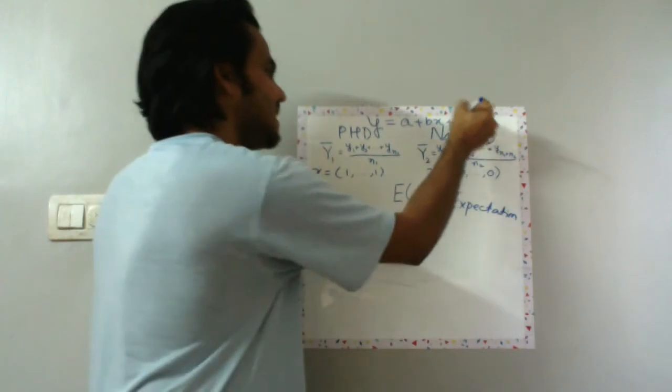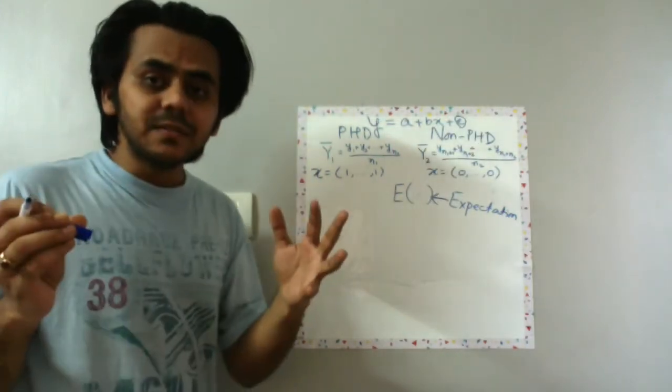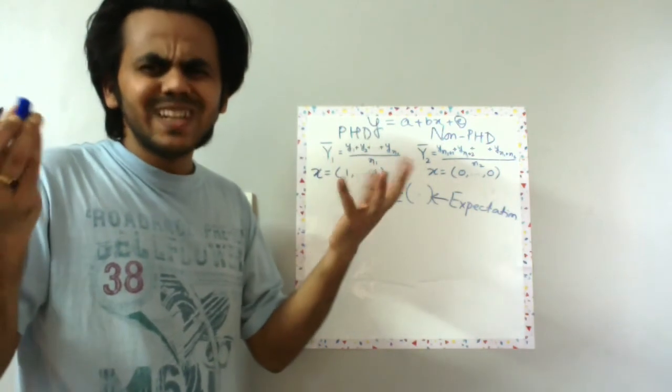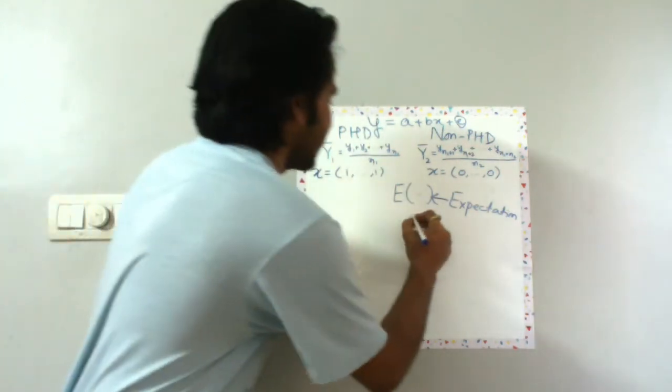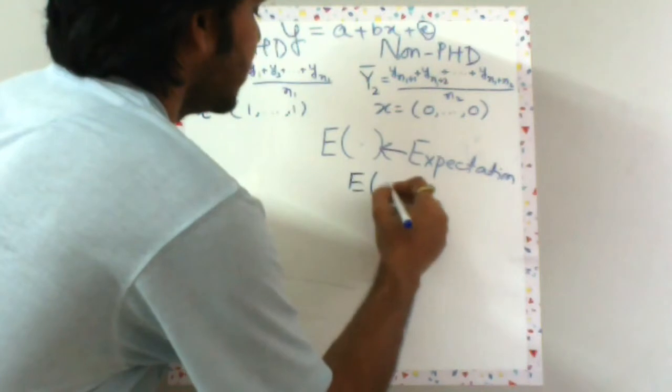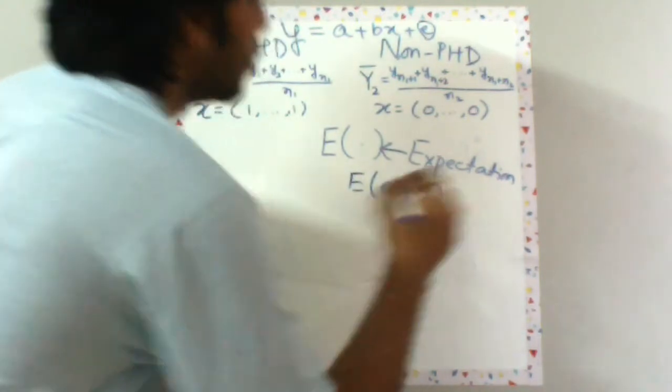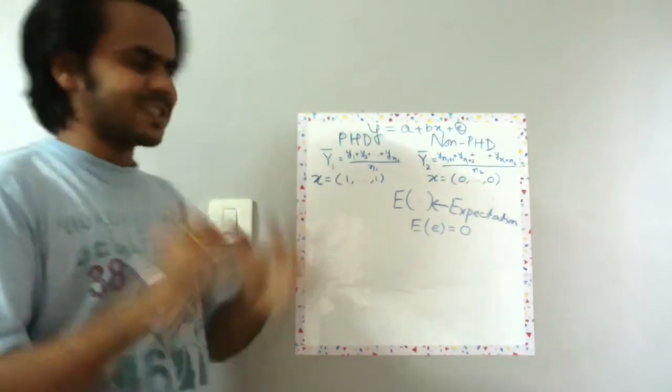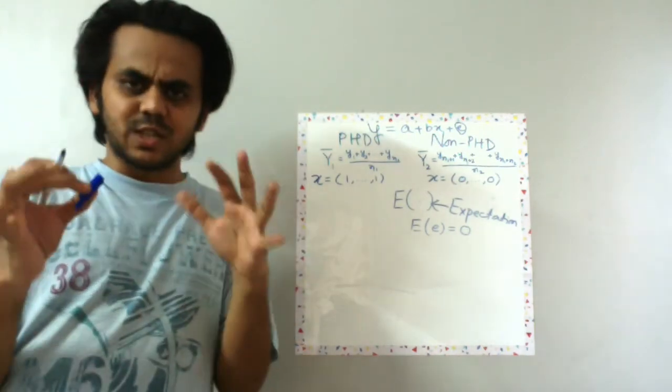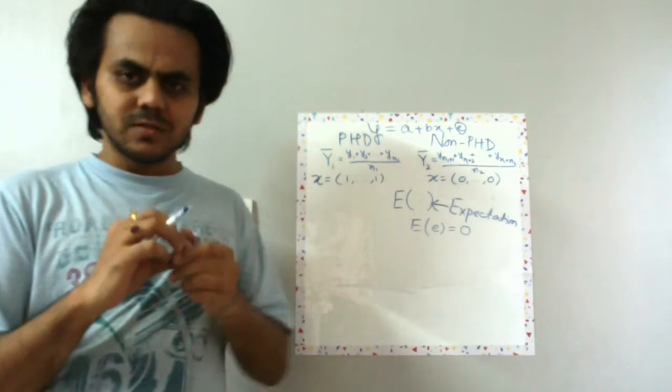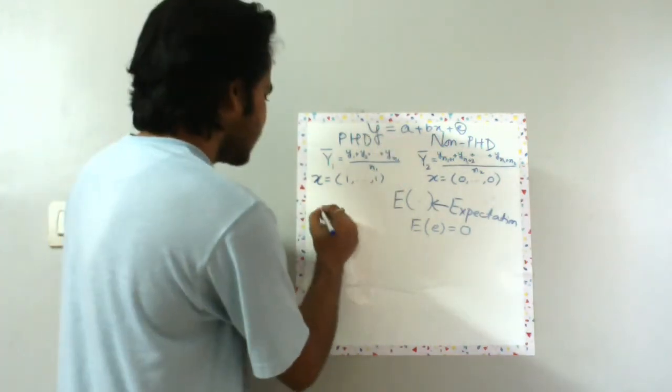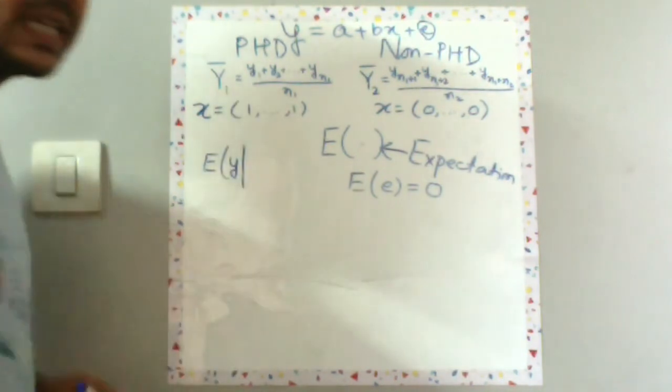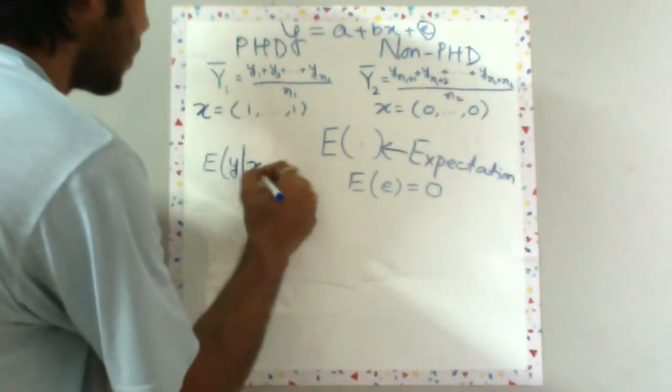Now this e is a random error term. What will be the average value of a random error term? Obviously it should be zero, so expectation of e is equal to zero. Now let's understand what will be the expected salary of PhD graduates using this equation. So expected salary of PhD graduates, meaning x equal to one.